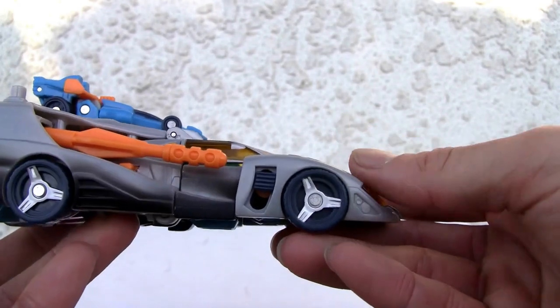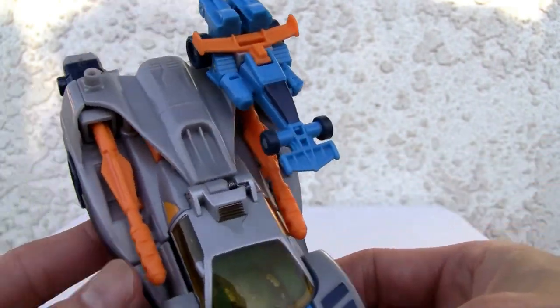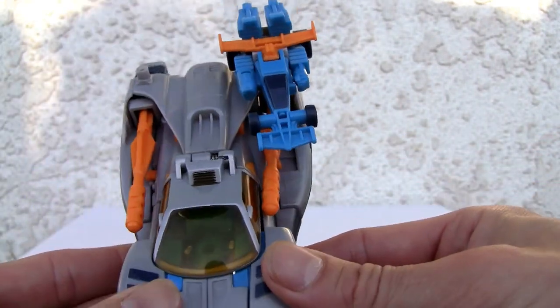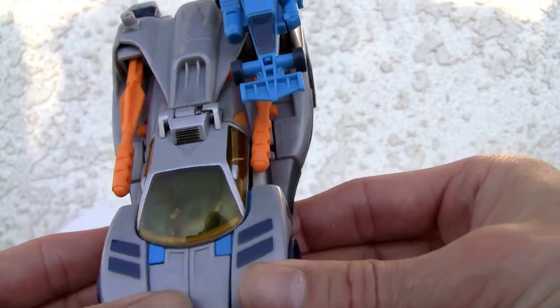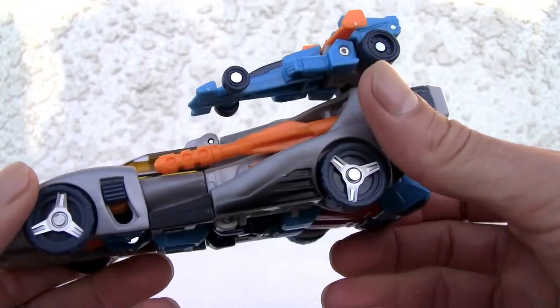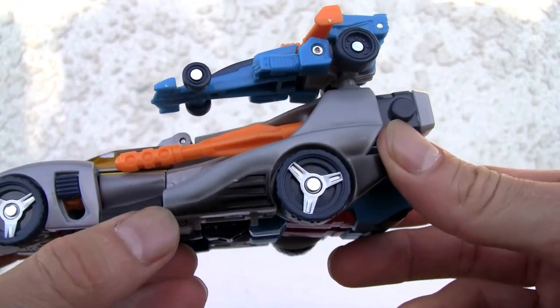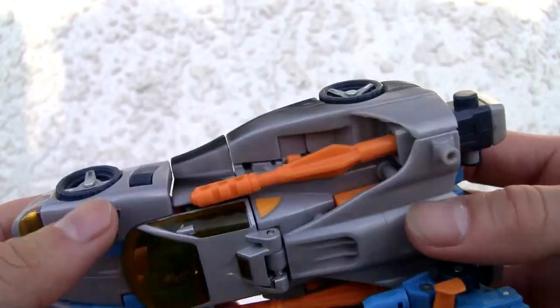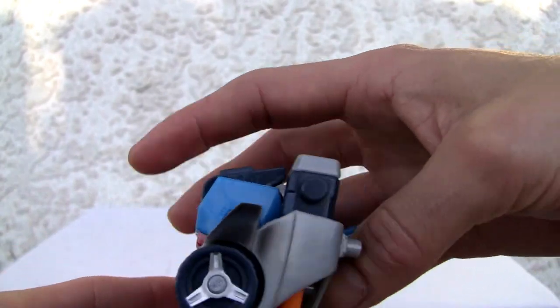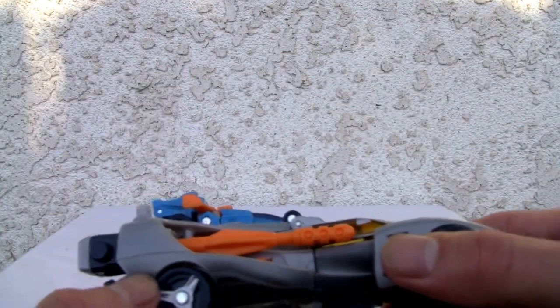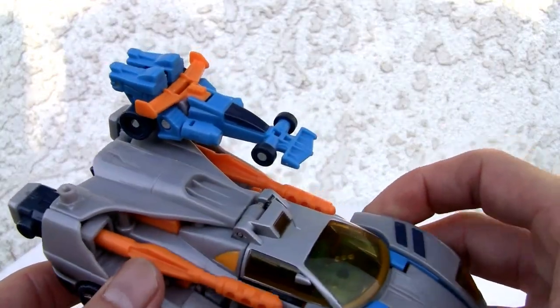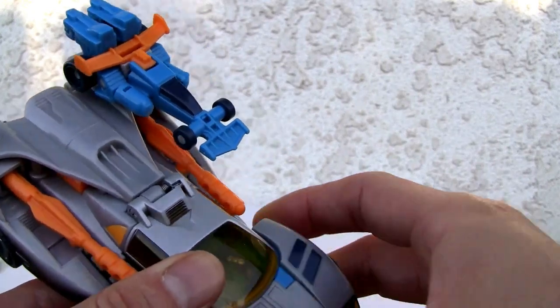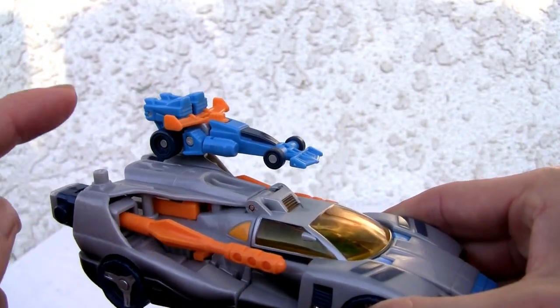It's like a futuristic Bugatti Veyron type looking thing. It's molded so well. I like the paint, the silver, it's kind of a gray. I like the paint touches right here. I don't know if the overspray was supposed to be that way, if that's a quality control issue, but it works well. Yeah, it rolls and it has these little launchers as well.